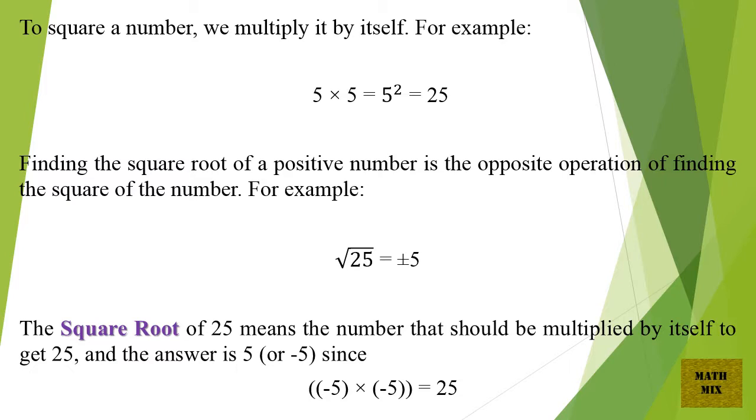Finding the square root of a positive number is the opposite operation of finding the square of the number. For example, square root of 25 equals plus and minus 5. The square root of 25 means the number that should be multiplied by itself to get 25. And the answer is 5, or minus 5, since minus 5 times minus 5 equals 25.